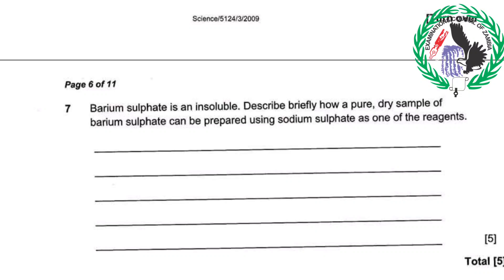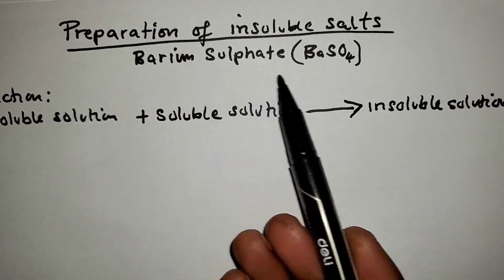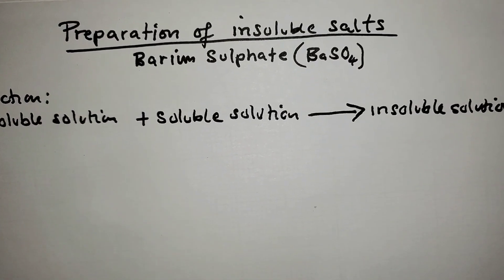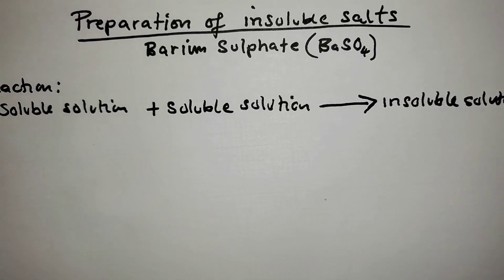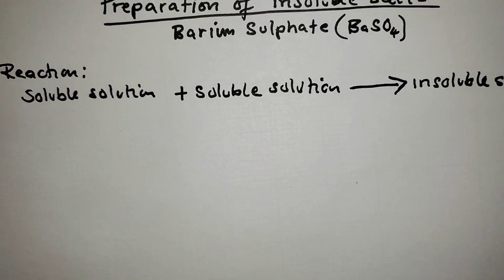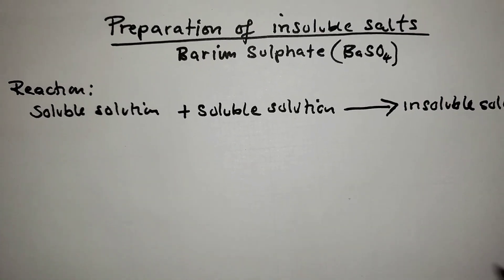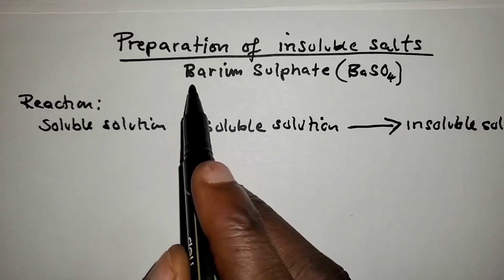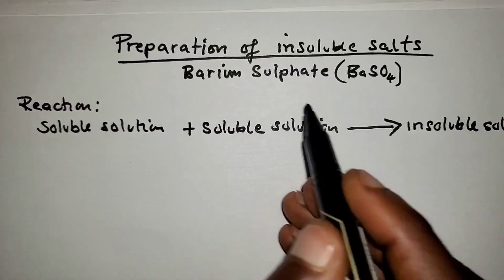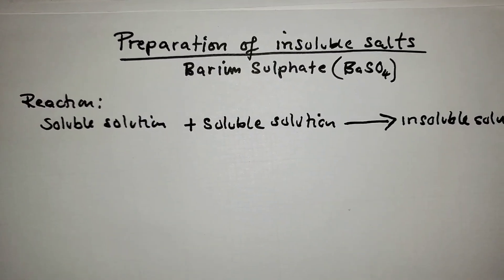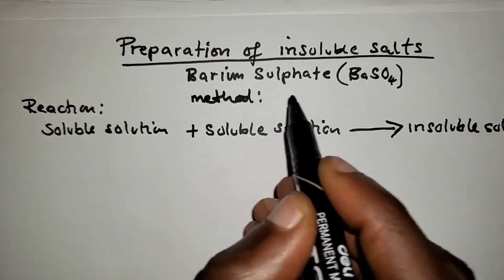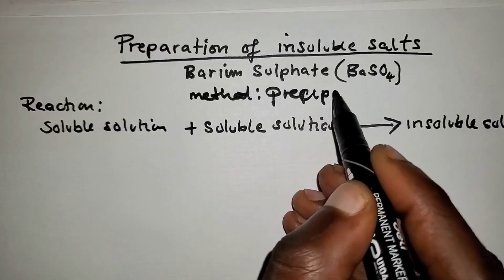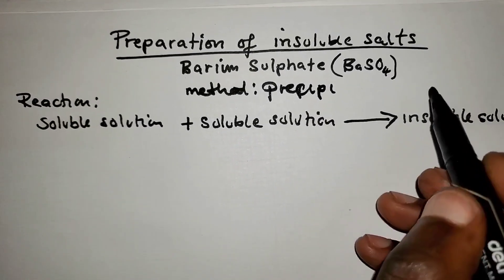Let's look at preparation of insoluble salts, specifically barium sulfate as an example. The method of preparation for barium sulfate is precipitation.